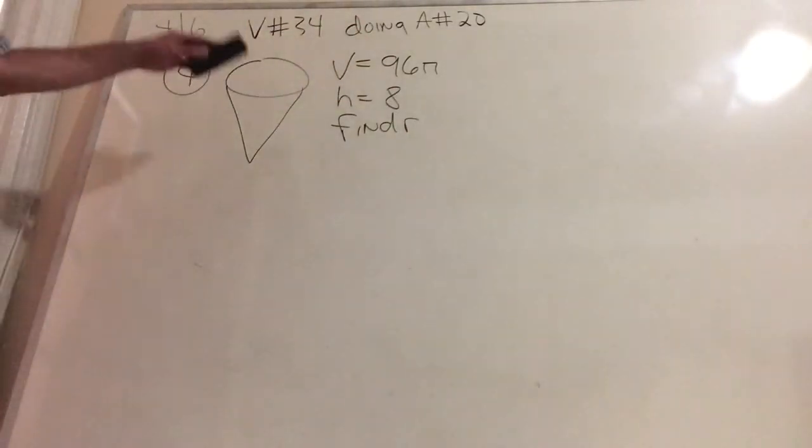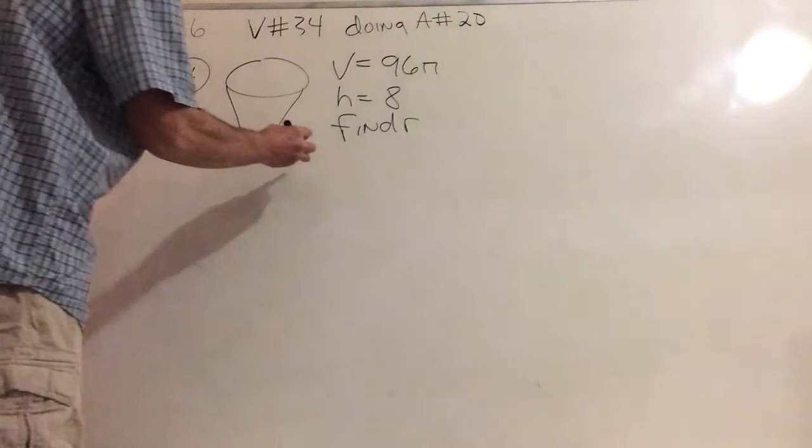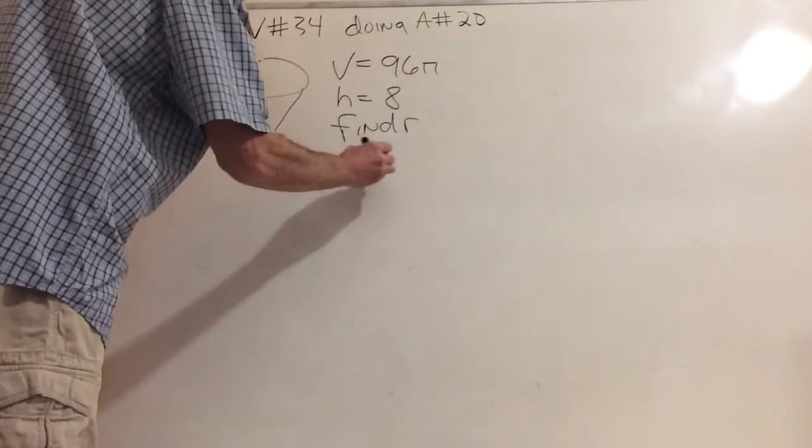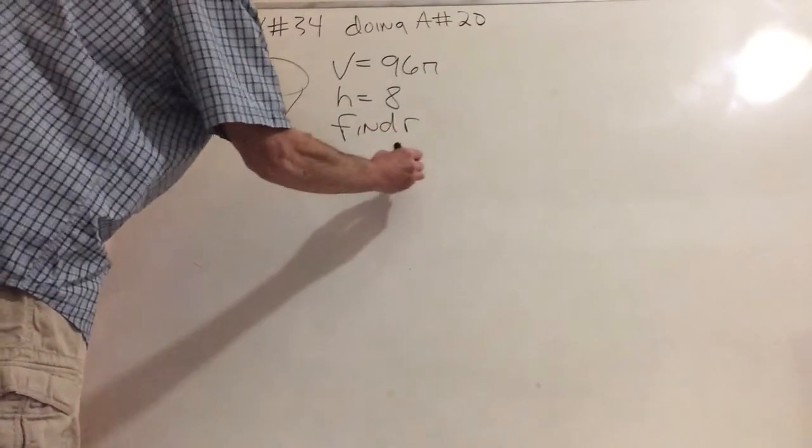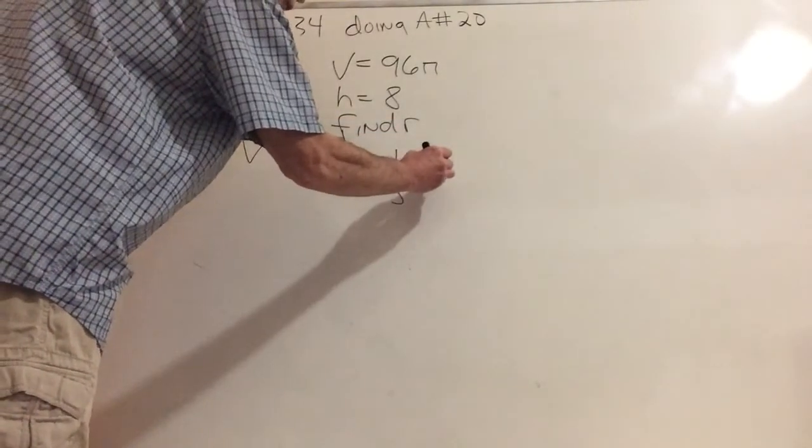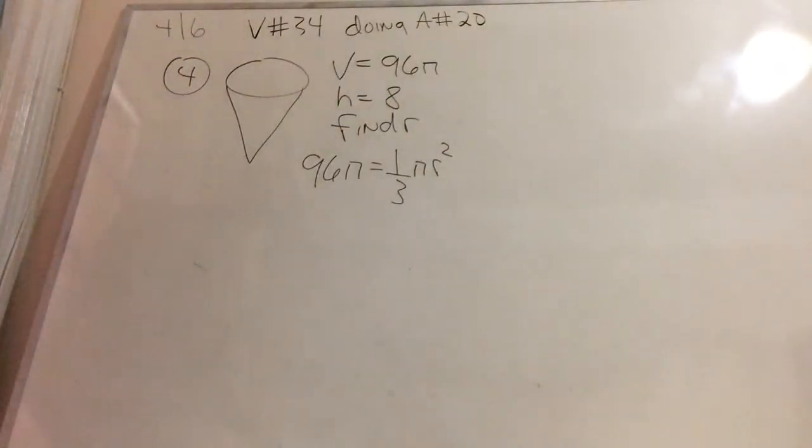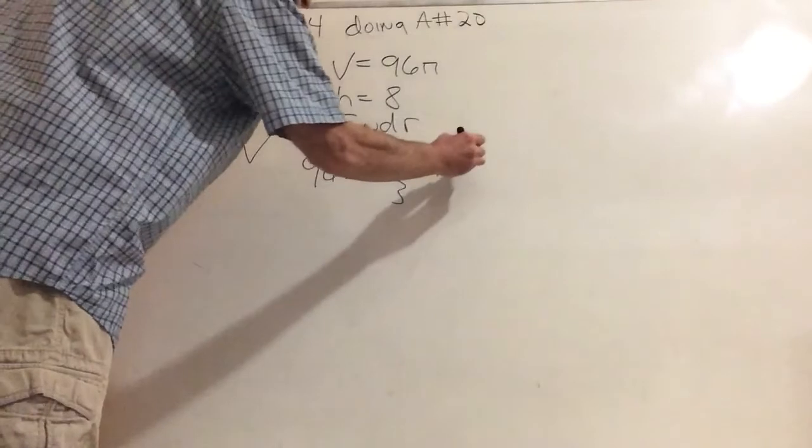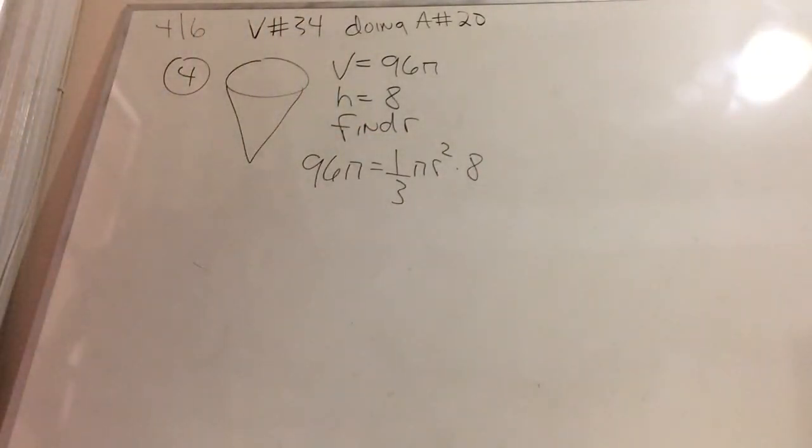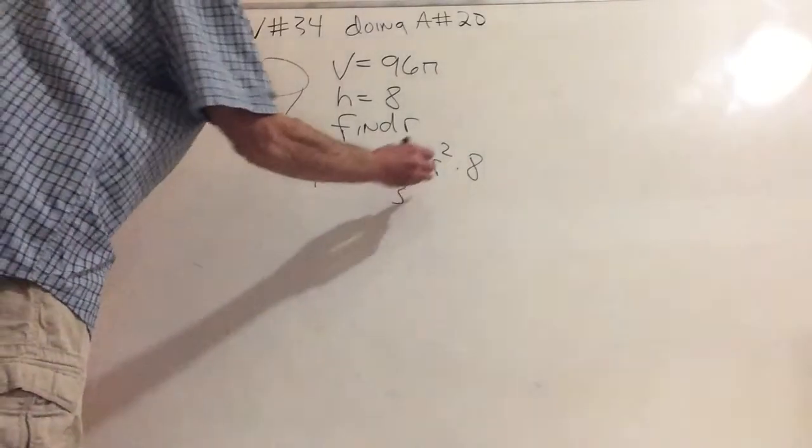And there'll be more of this calculator work. Seems to be the way that they want to go. All right. So here we go again. We have that 96π equals 1/3 πr², which we don't know and we're going to try to figure out, times h. And h is 8.